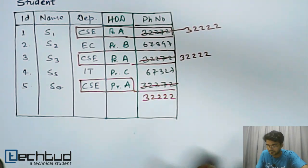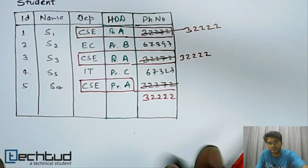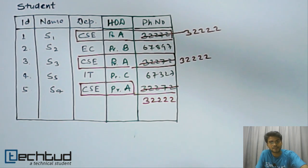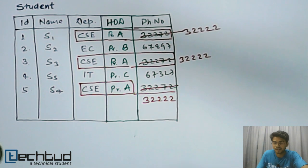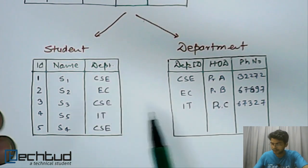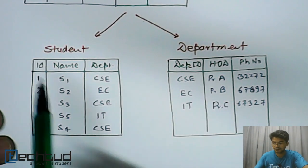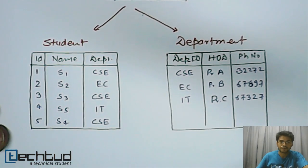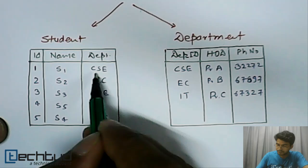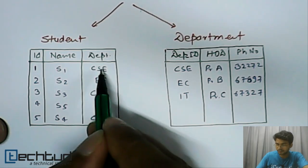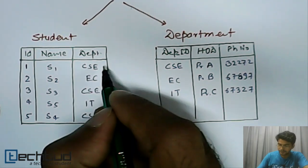That's where normalization comes into the picture. Normalization breaks this table into two tables. The previous student table is split into a Student table and a Department table.